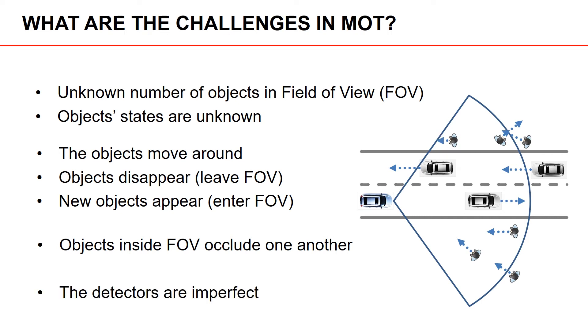Lastly, a general challenge in MOT is that the detectors that we employ are imperfect. This means that they are susceptible to two kinds of errors: misdetections and false detections. We will learn more about this next.